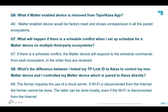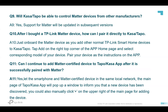Question 8 — What's the difference between linking a TP-Link ID to Alexa to control non-Matter devices versus controlling Matter devices paired directly with Alexa? The former requires the cloud server — if Wi-Fi disconnects from the internet, it cannot function. The latter can work locally even if Wi-Fi is disconnected from the internet, because it bypasses the cloud server and sends commands directly to the controller or hub. Question 9 — Will the Tapo app be able to control Matter devices from other manufacturers? Yes, support for Matter will be updated in subsequent versions, but currently it is not yet available.